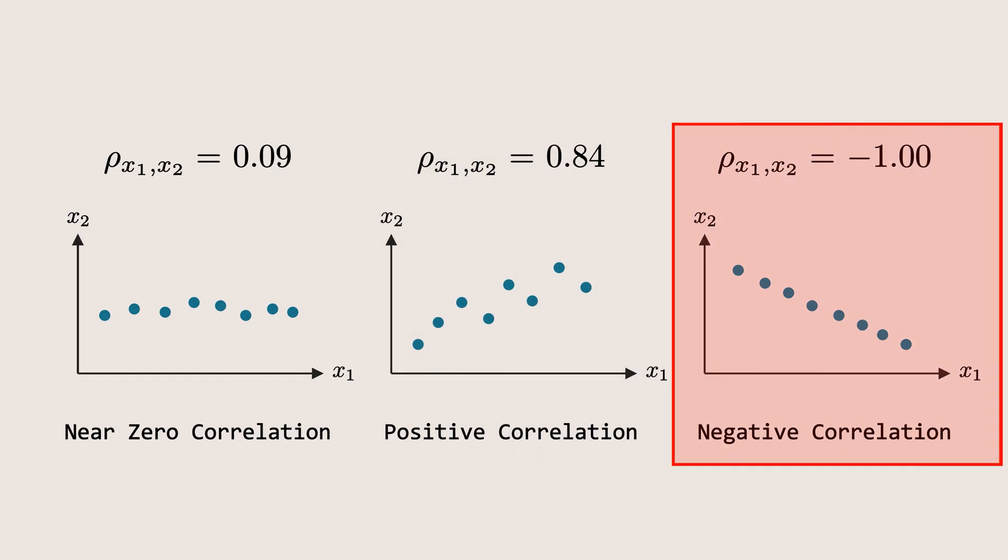If the correlation is close to minus 1, it means there is a strong negative relationship. As one feature increases, the other decreases.